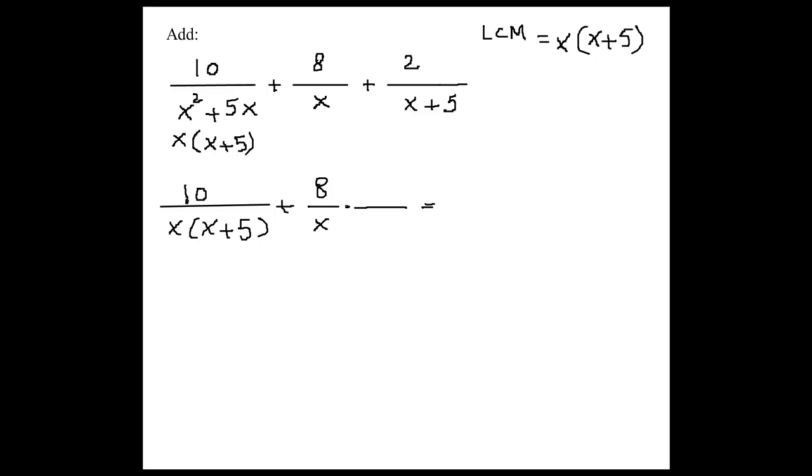X plus 5? X plus 5? Right. Cherie says it's x plus 5. So I have to multiply the second fraction with x plus 5 over x plus 5. We really multiply the second fraction by 1. Because as you see here, x plus 5 over x plus 5 is 1. So we are not changing the value of the second fraction.